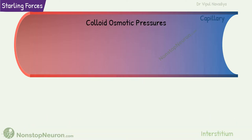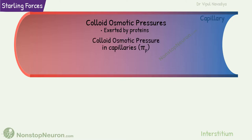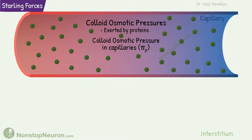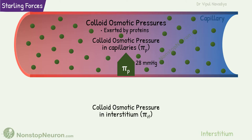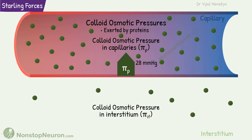Now, the colloid osmotic pressure. It is exerted by proteins. Colloid osmotic pressure in the capillary is exerted by plasma proteins; it pushes fluid inward and is about 28 mmHg. Moving to the last one — colloid osmotic pressure in the interstitium. Although the capillary wall is highly impermeable to proteins, some proteins do leak through pores and by transcytosis. These proteins and proteoglycans contribute to the colloid osmotic pressure in the interstitium, which tends to pull fluid into the interstitium. It is about 8 mmHg.